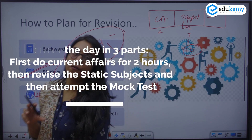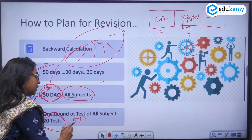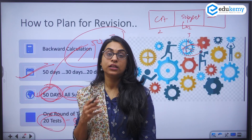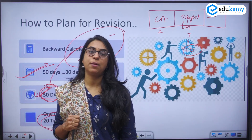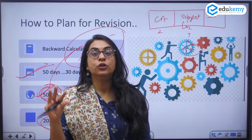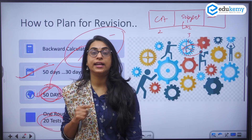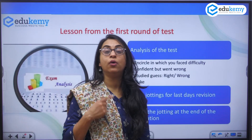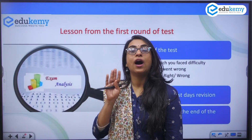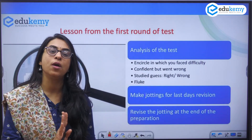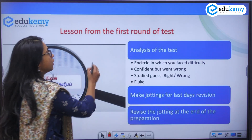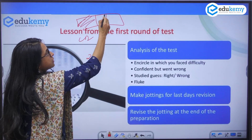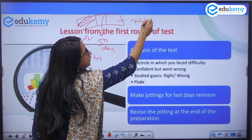You should write nearly 20 tests in these 50 days, meaning you will be writing a test every second or third day. There's also a strategy on how to write the test — you don't simply solve it. You have to sit down for two hours with the OMR sheet in exam-like conditions. So the day division is: current affairs, subject completion across 50 days, and around 20 tests with the OMR sheet.